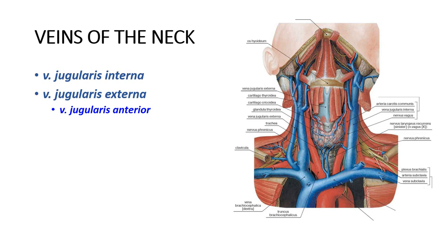Hello guys, let's continue our topic about the vena cava superior system and let's take a look at the veins of the neck. The main vein of the neck is the vena jugularis interna.